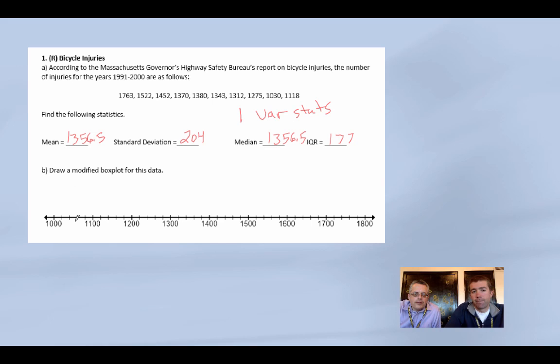Maybe we want to put one variable stats at the top to remind people that's where we got those things from. And then we want to make a modified, could you circle that word modified? On the last quiz, it asked for a modified plot. It was data that had outliers, but people do regular plots sometimes. So when it says modified, gotta do it. Alright, Mr. Lewis, the minimum is 1,030. Q1 is 1,275. The median is 1,356.5.